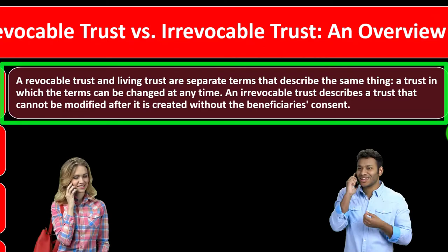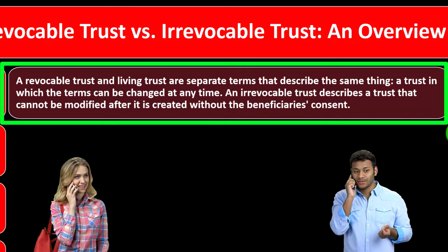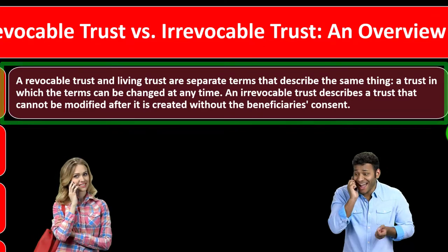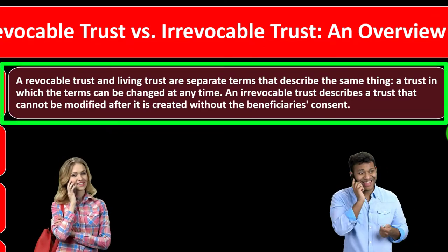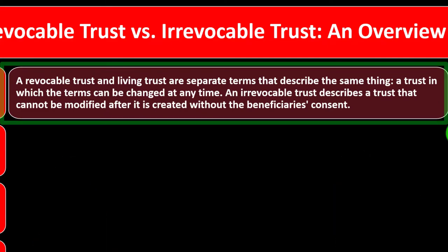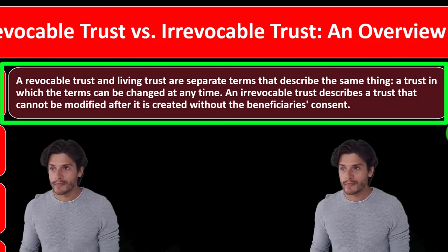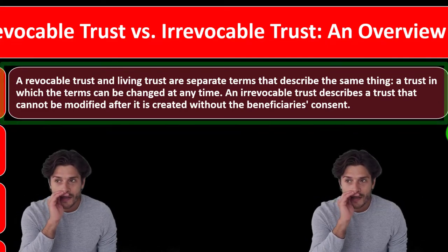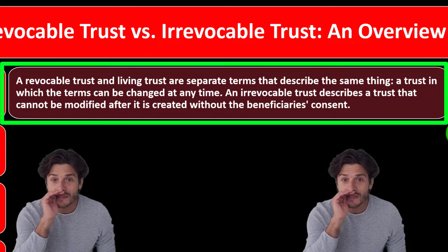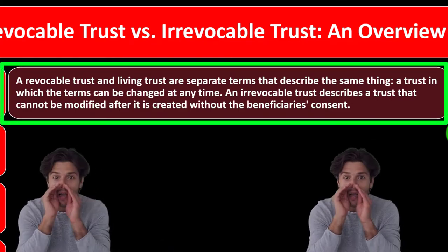A revocable trust and a living trust are separate terms that describe the same thing: a trust in which the terms can be changed at any time. An irrevocable trust describes a trust that cannot be modified after it is created without the beneficiary's consent.